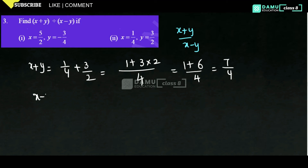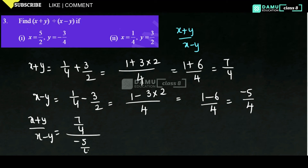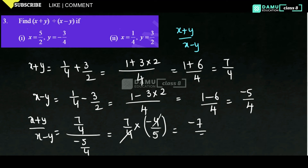Next, x minus y equals 1 by 4 minus 3 by 2. LCM is 4. So 1 minus 3 into 2 equals 1 minus 6 by 4, that is minus 5 by 4. So x plus y by x minus y is 7 by 4 divided by minus 5 by 4, which equals 7 by 4 into minus 4 by 5. The 4s cancel, so minus 7 by 5 is the answer.